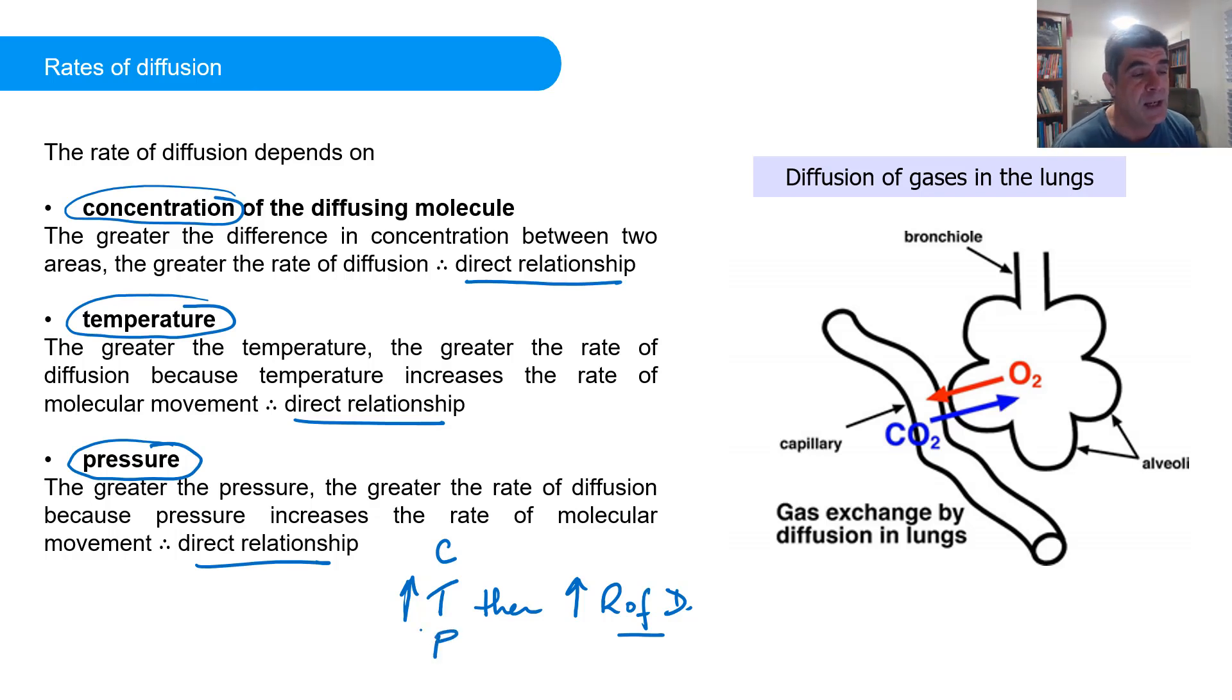So an example of this would be what happens in the lungs. We draw air into our lungs. The air goes through into the bronchioles and eventually into these little sort of grape-like sacs called alveoli. Now, the alveoli are sitting right next to the blood system, the capillaries in particular. And so there's only a thin membrane that separates the alveoli from the capillary.